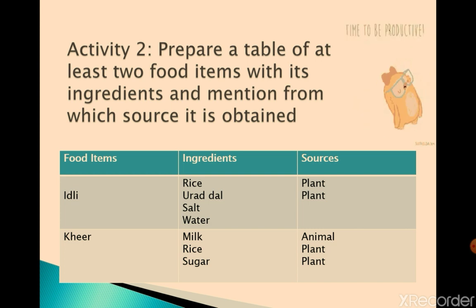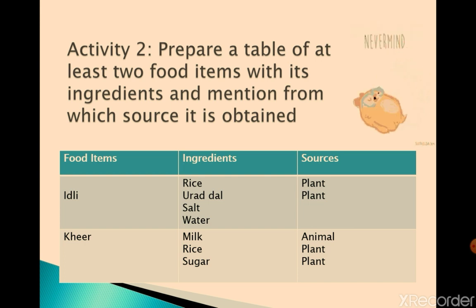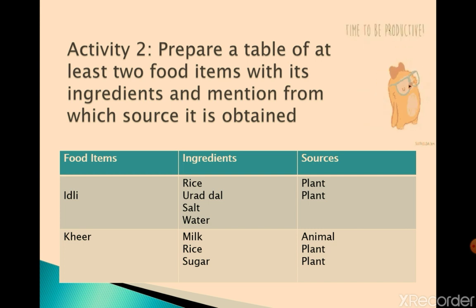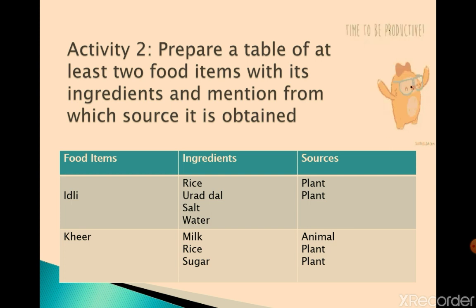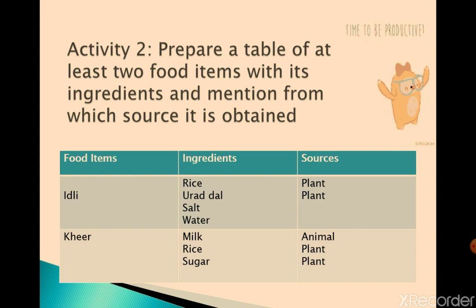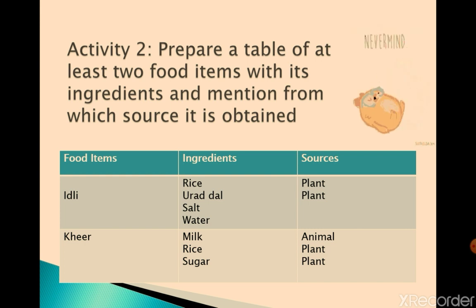Let us take another example — Kheer. I think everybody likes it! Kheer is prepared using the ingredients milk, rice, and sugar. Milk is obtained from an animal. Rice is obtained from a plant. And sugar is obtained from sugarcane, which is also a plant.